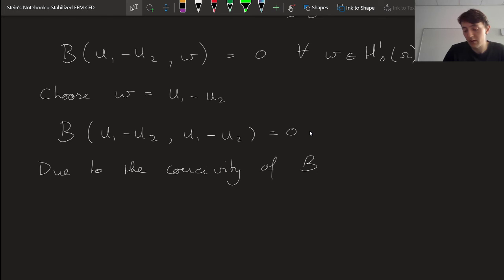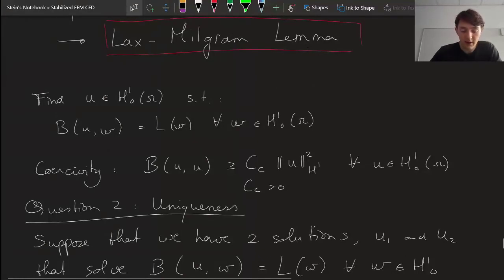this means that u₁ minus u₂ is equal to 0. Yeah, because only then can I get a 0 on the right-hand side because the norm of the 0 function is equal to 0.